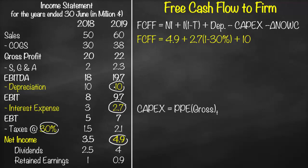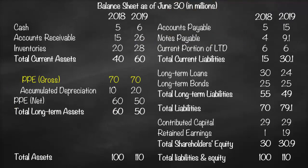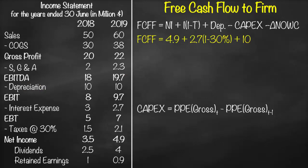We have two ways to calculate capital expenditure. The first is: CapEx = PP&E Gross at time t minus PP&E Gross at t−1 (previous year). Looking at the balance sheet, PP&E Gross in 2019 minus PP&E Gross in 2018 gives us 70 minus 70, which equals 0.